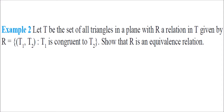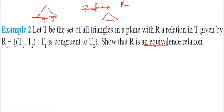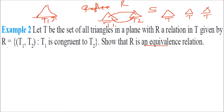Example: Let T be the set of all triangles in a plane with R defined by T1 is congruent to T2. Show R is an equivalence relation. Reflexive: T1 is congruent to itself. Symmetric: if T1 is congruent to T2, then T2 is also congruent to T1. Transitive: if T1 is congruent to T2 and T2 is congruent to T3, then T1 is congruent to T3. Therefore R is an equivalence relation.